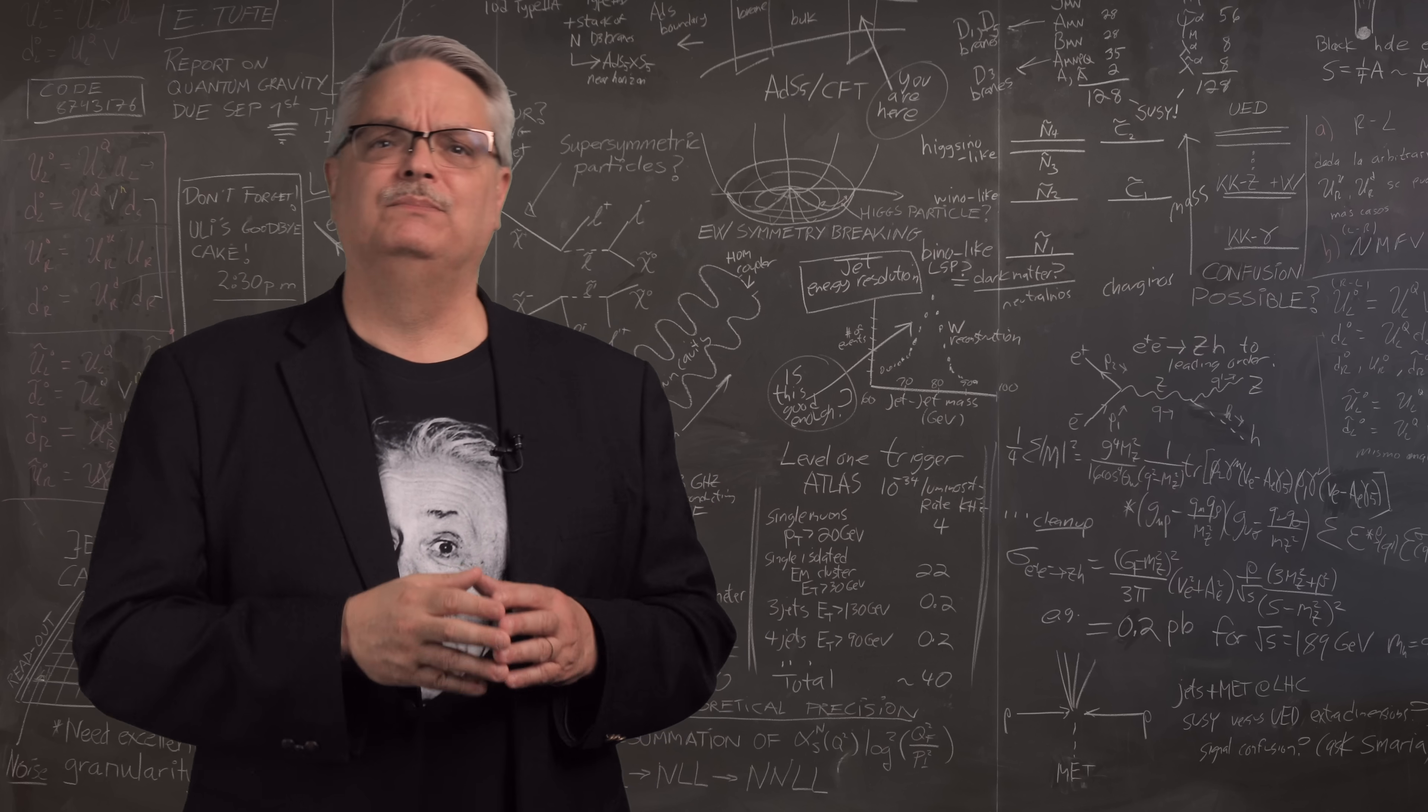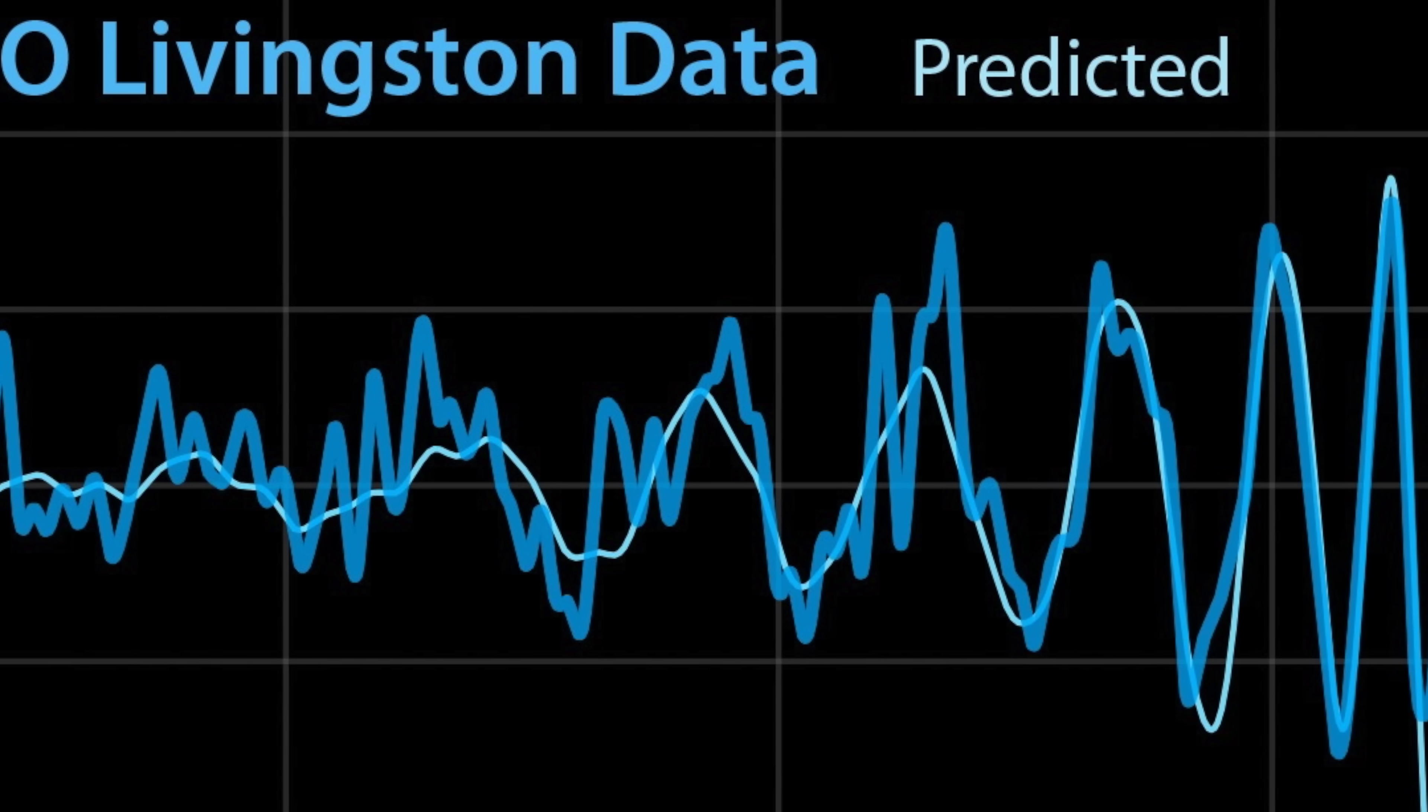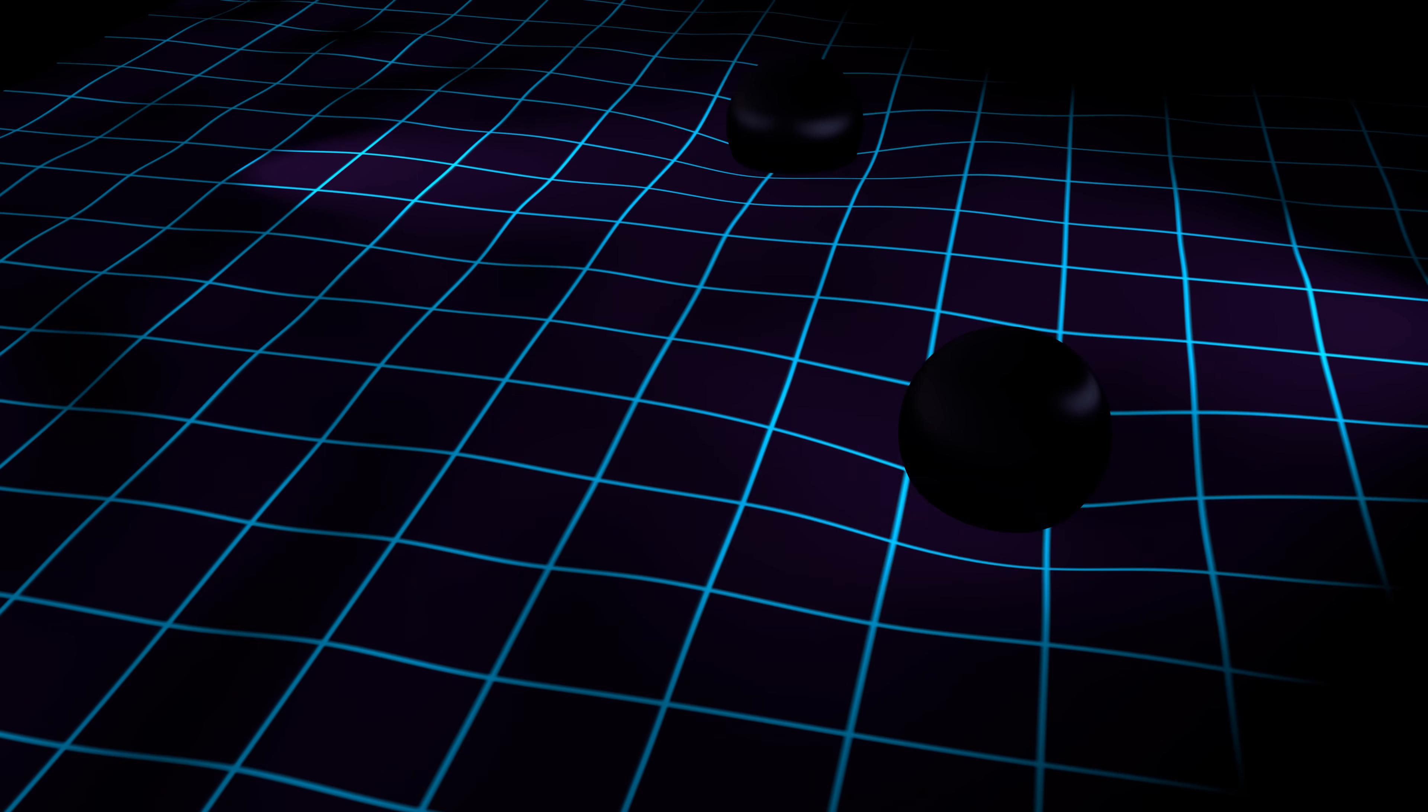Pretty weird stuff, to be sure, but it's been proven time and again with detailed predictions about the orbit of Mercury and the recent observation of gravitational waves. There's no credible doubt in the scientific community about general relativity. It's a good representation of reality.